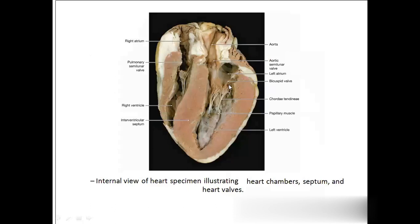This is the real picture of the heart. You can see here the right atrium, left atrium, right ventricle, and left ventricle. We call these the papillary muscles, and this is the chordae tendinae. These are the cusps — this is the bicuspid with two cusps, and here we have the tricuspid. Here also we have the papillary muscles.